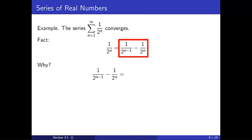Why is this true? If we start with the expression on the right, 1 over 2^(n-1) minus 1 over 2^n, we can use exponent rules to rewrite this as 2 over 2^n minus 1 over 2^n. And now the statement becomes obvious.